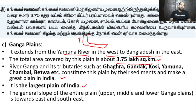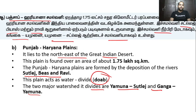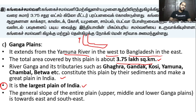This is the largest plain of India. The Ganga is the largest plain. Punjab is 1.75 lakh square km, Rajasthan is also around 1.75 lakh square km. Rajasthan equals approximately 2 lakh square km in total.